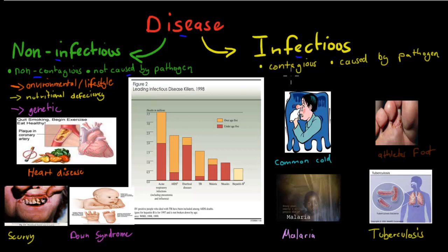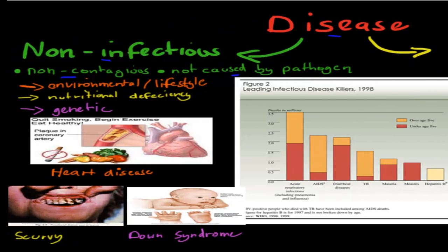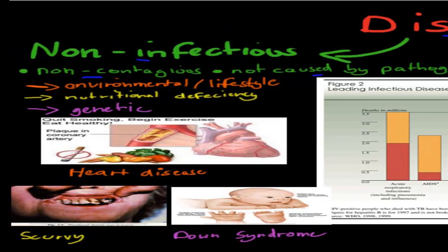Whereas infectious diseases are contagious, which means we can catch them, and they are caused by a pathogen. These are basically the big differences between the two.